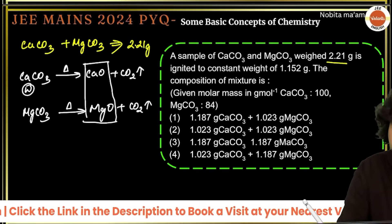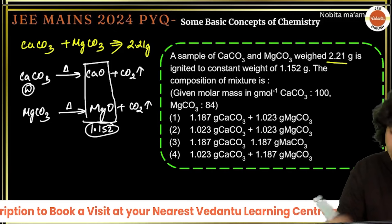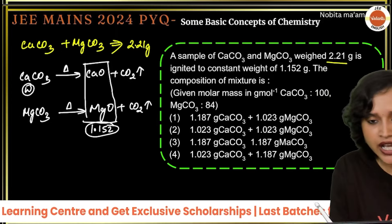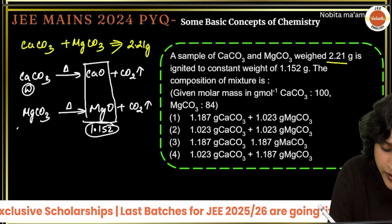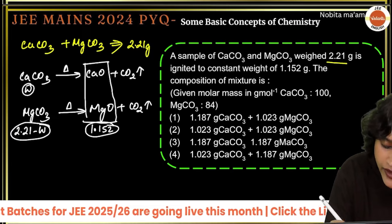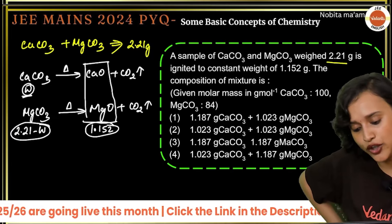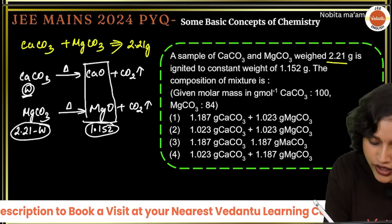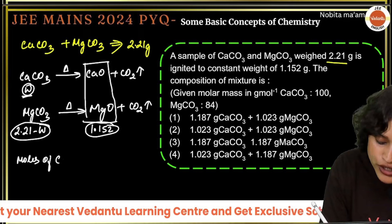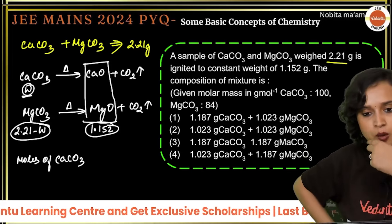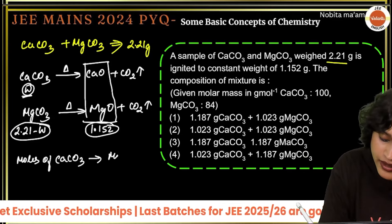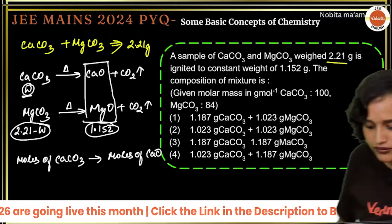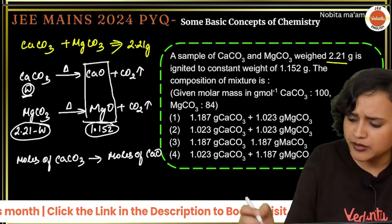From the stoichiometry, equal moles of CaCO₃ give equal moles of CaO. So: w/100 = weight of CaO / 56 (molar mass of CaO = 56). Therefore weight of CaO = 56w/100. Similarly, (2.21 − w)/84 = weight of MgO / 40 (molar mass of MgCO₃ = 84, MgO = 40). Weight of MgO = 40(2.21 − w)/84.